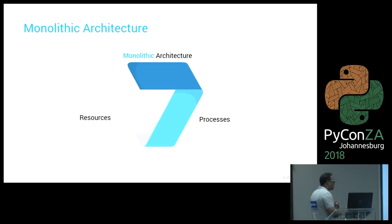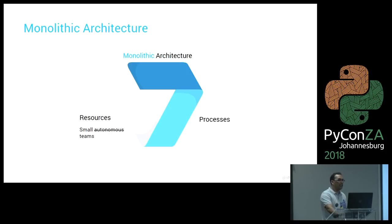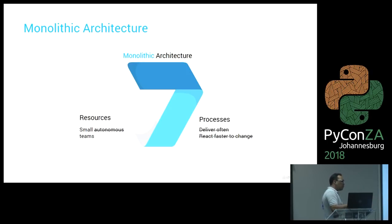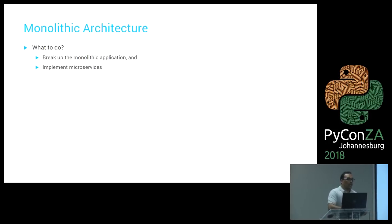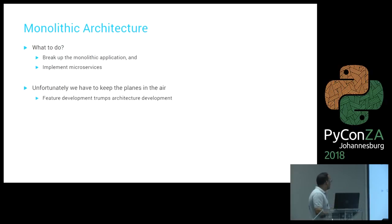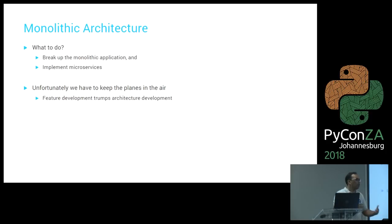How does that stack up against modern software development principles? You can have small teams, but they can't work independently because you still have one big monolithic application — and that translates directly to not being able to deliver continuously. So we realized we wanted to break up the monolithic application and implement microservices. We went to the business, but we had a product already up and running — we had to keep the planes in the air, and feature development always trumps architecture development because architecture development doesn't bring in the money.